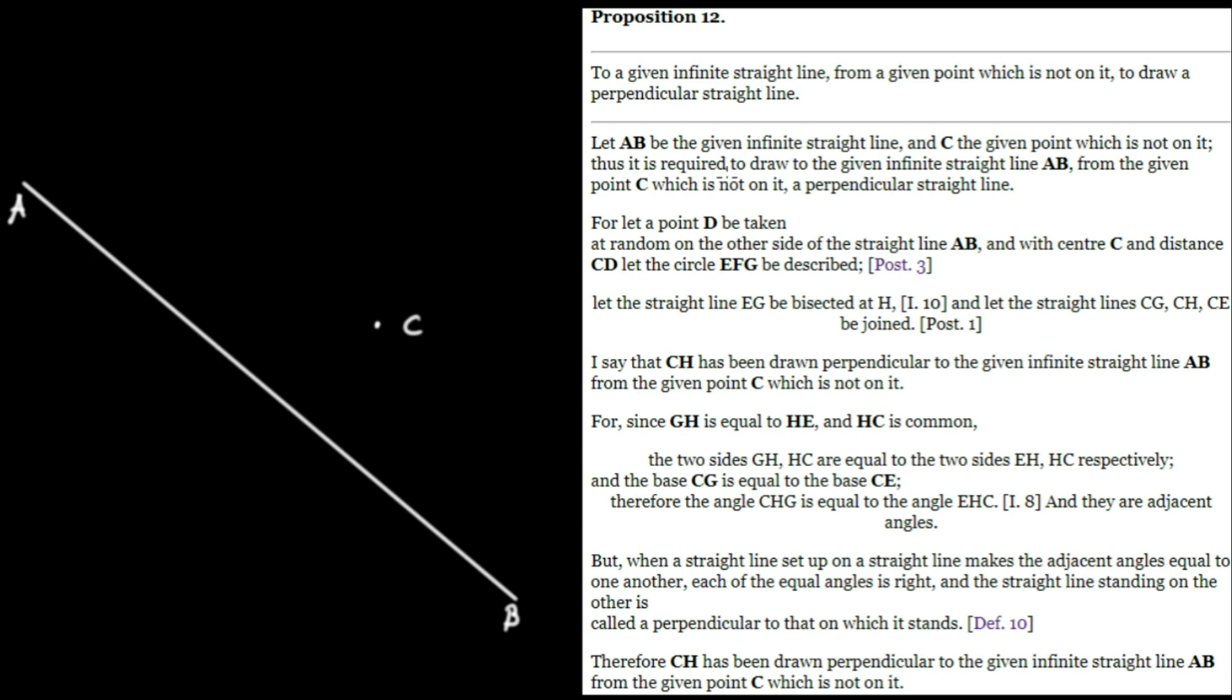Thus, it is required to draw to the given infinite straight line AB from the given point C, which is not on it, a perpendicular straight line. For let a point D be taken at random on the other side of the straight line AB. We'll just pick that point D right there.